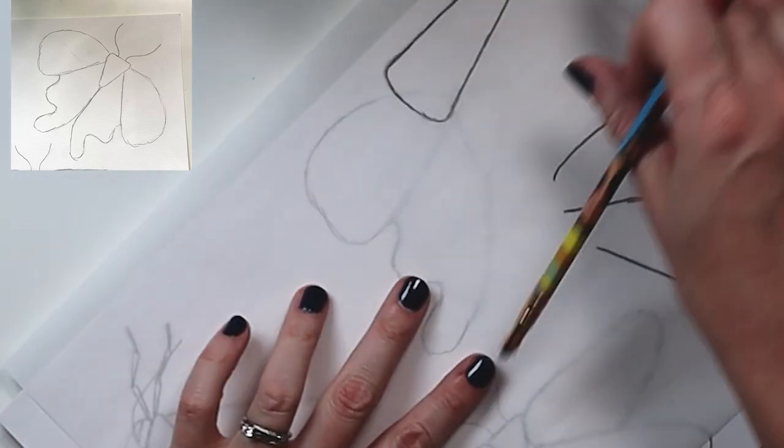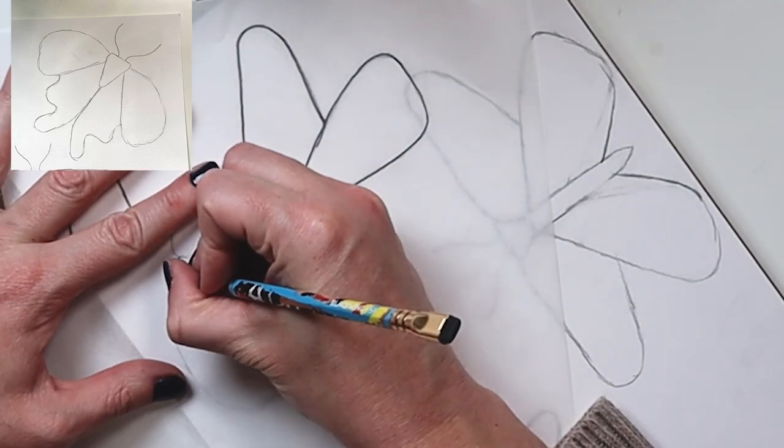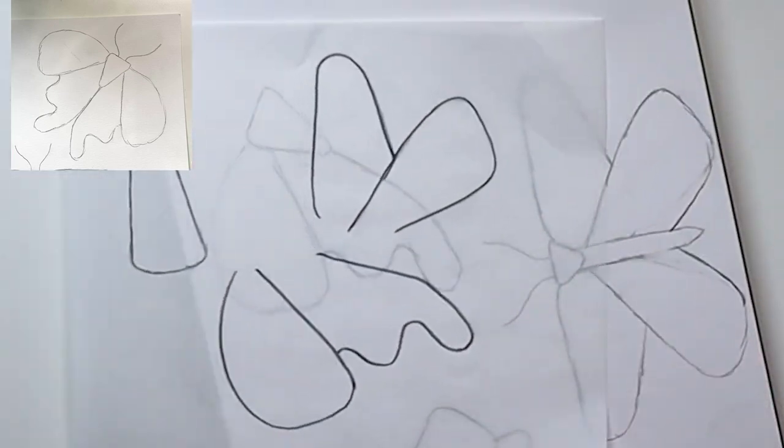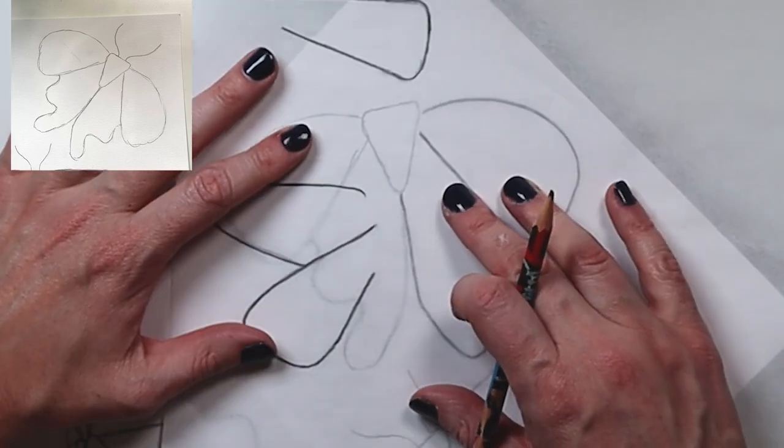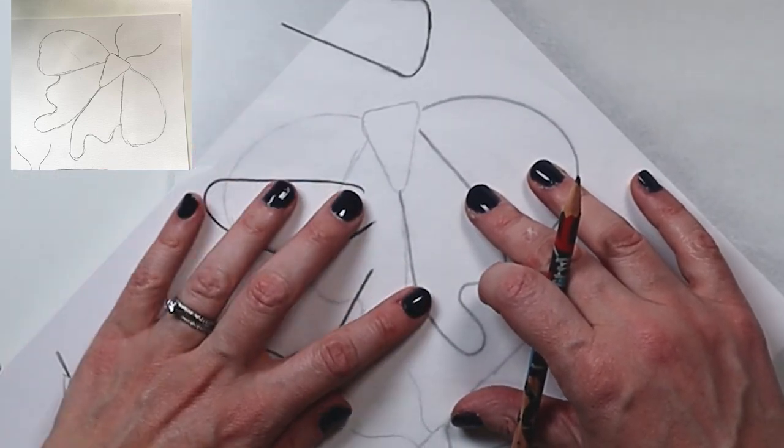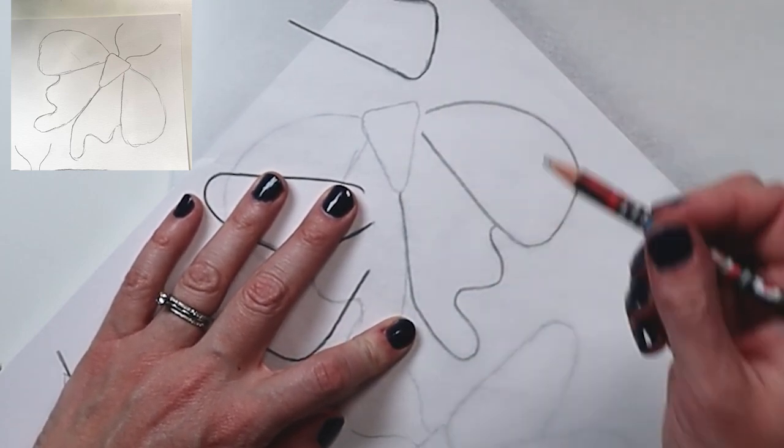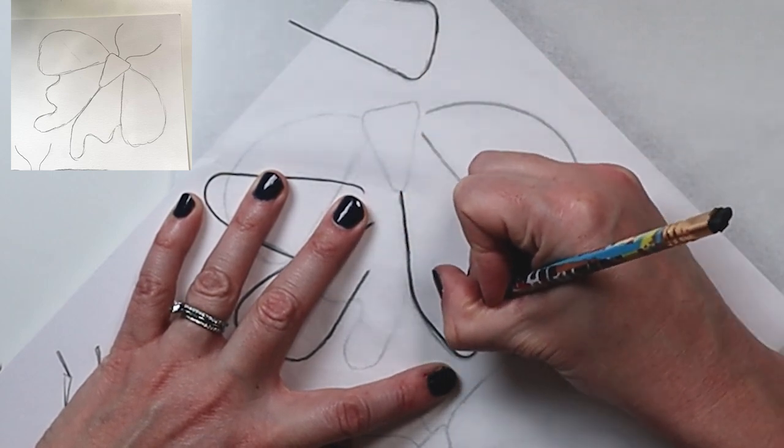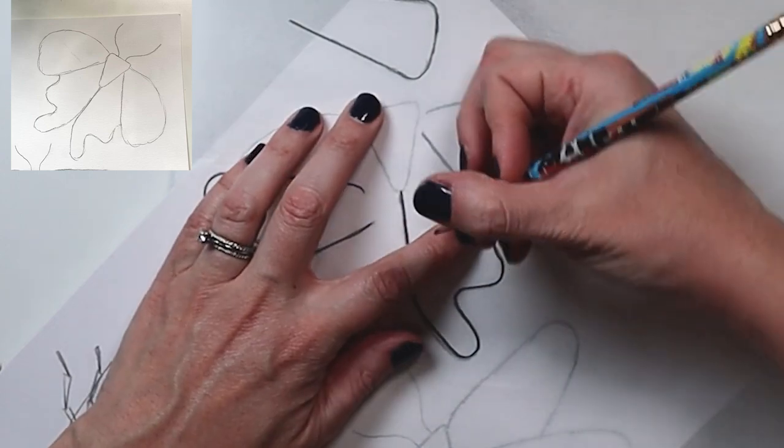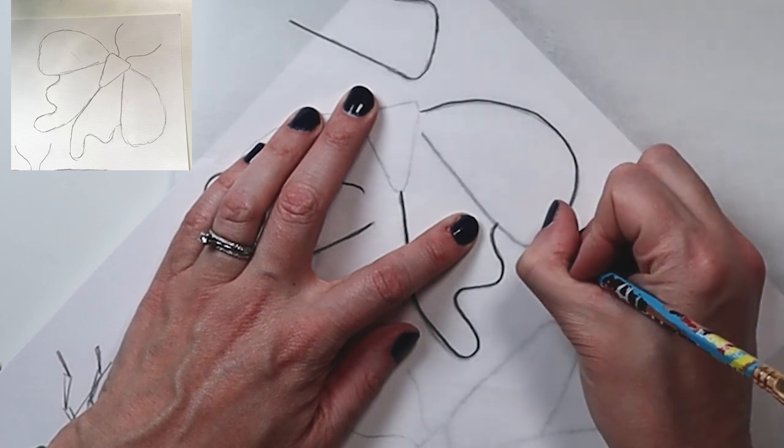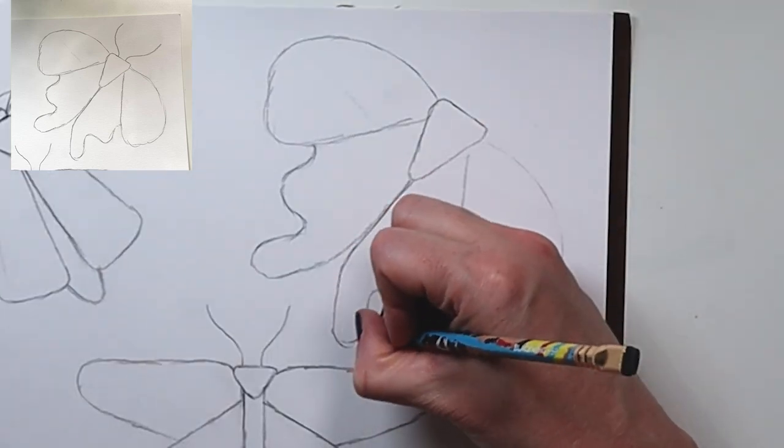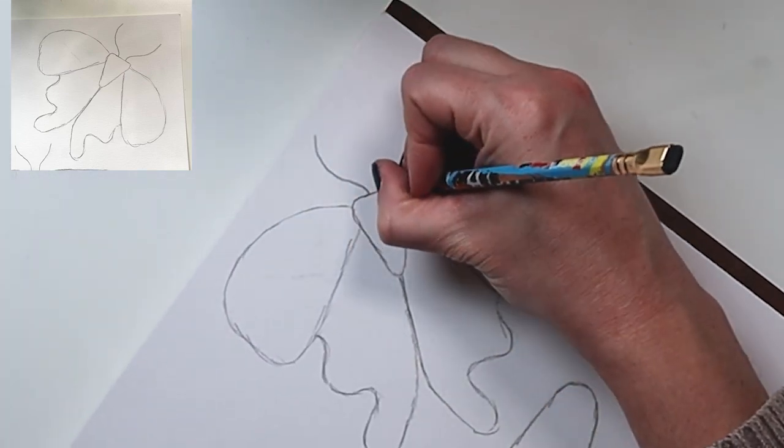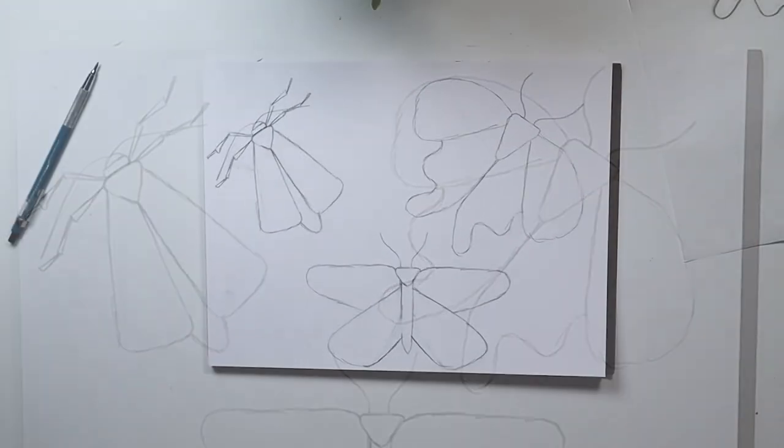Then again we're going to grab our tracing paper and flip it over. Now this is where it gets a little bit trickier, we want to line up this portion down here. So it's more important that we line up this portion and then we can just adjust here as we go. And then again the antenna. And those are our three moths.